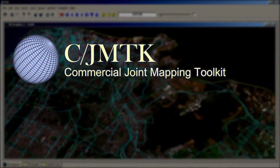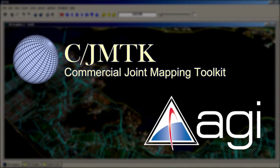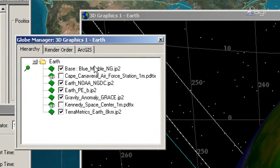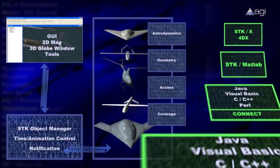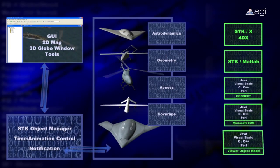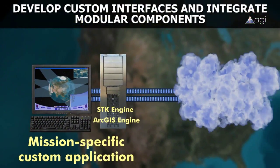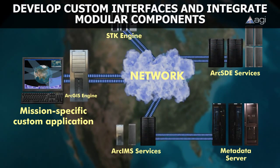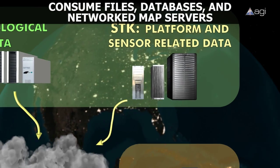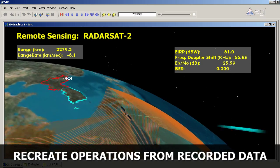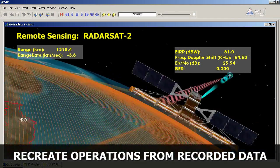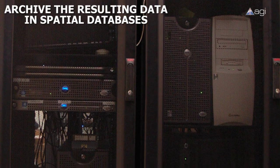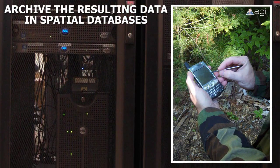As part of the Commercial Joint Mapping Toolkit team, AGI software is immediately available for both desktop and enterprise users. In addition to out-of-the-box technology, AGI's flexible software architecture provides users with the extensibility options necessary to develop custom interfaces and integrate modular components with other software applications and enterprise frameworks, consume files, databases, and networked map servers, recreate operations from recorded data, publish live analyses into enterprise architectures, and archive the resulting data in spatial databases for distribution and subsequent analysis.